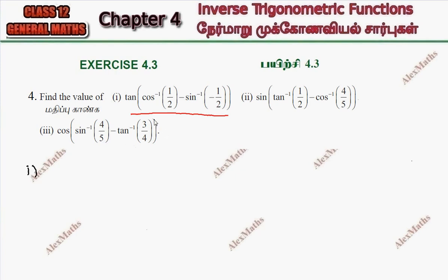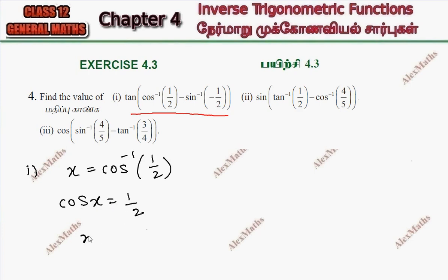So in this term, the first part is x, and this is cos inverse of half. Now, cos x equals half. This is possible when x equals π/3, and this also belongs to the principal values.